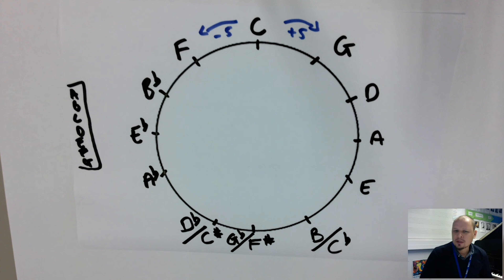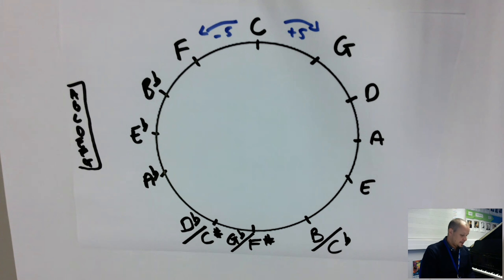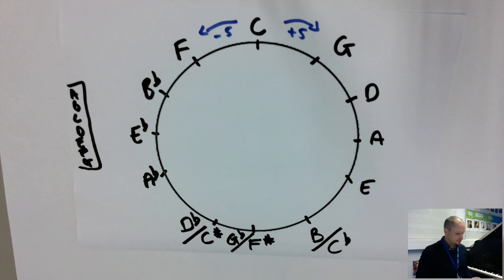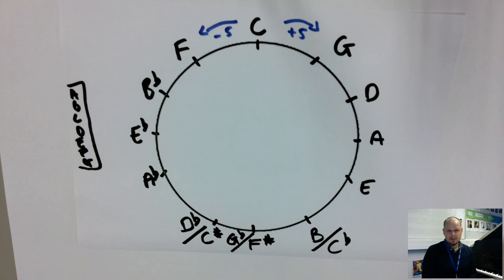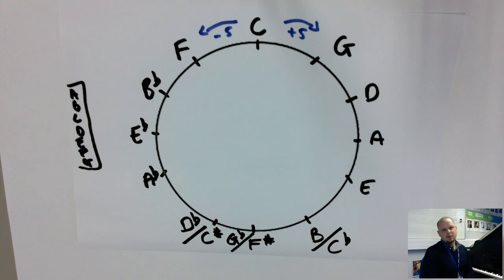The reason it gets messy at the bottom is because D flat and C sharp are enharmonic equivalents — on the keyboard, C sharp and D flat are the same note. So if you write something in C sharp major and in D flat major, they'll sound the same. However, they are two different keys: one has seven sharps and one has five flats. The same applies to F sharp and G flat, and B and C flat — those are all enharmonic equivalents.